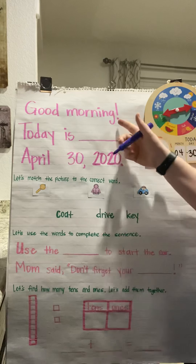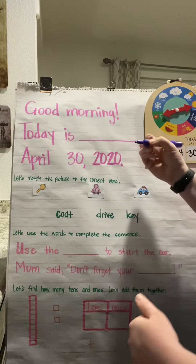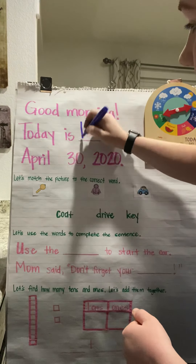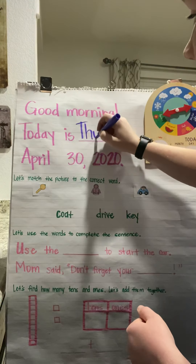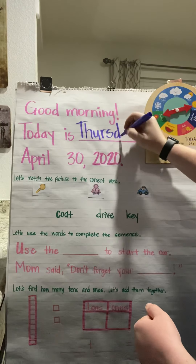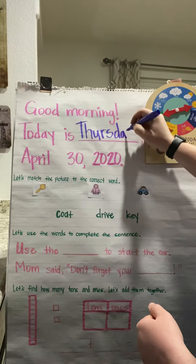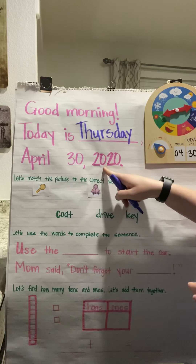Alright, so good morning with exclamation point. Today is — we know that yesterday was Wednesday, so that would be Sunday, Monday, Tuesday, Wednesday, and then Thursday, right? Thursday is with a capital T. Wednesday, April 30th, 2020.